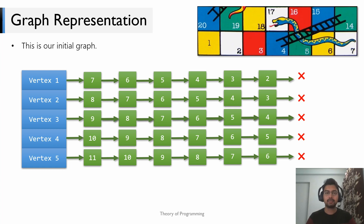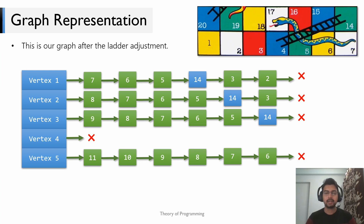To understand this from a coding point of view: this is how our adjacency list would look if there were no ladders or snakes — the simplest case. There are six nodes in the linked list associated with each vertex, representing the six possible moves from a given vertex. The linked list is in descending order due to head insertion. For vertex 1, the possible moves go to vertices 2, 3, 4, 5, 6, 7. After the ladder adjustment, all moves leading to vertex 4 are replaced with vertex 14.